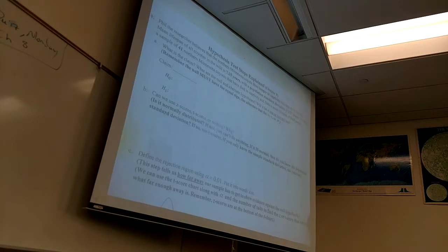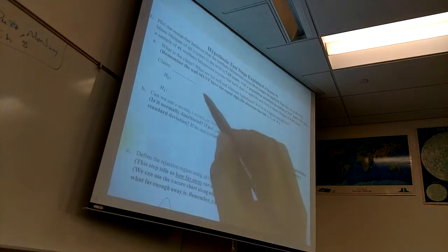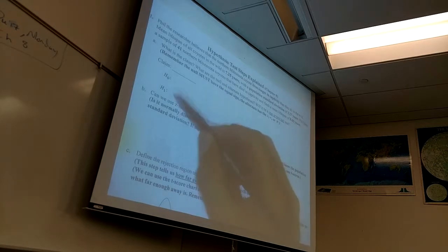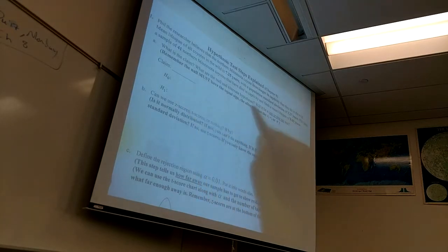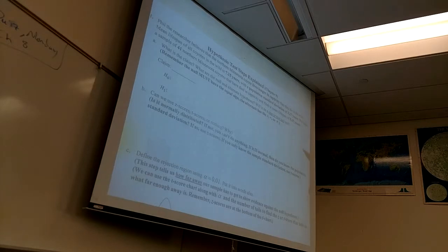Let's go through this one step at a time. Part A is what we just talked about — the idea of a claim being made and the H0 and H1. What's the claim being made in this problem? The claim has to involve some feeling about a measurement.